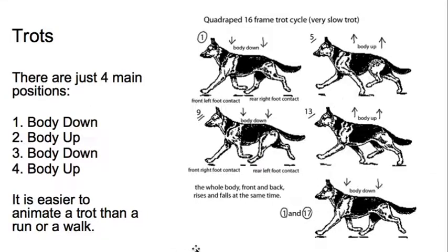Here's the main body positions shown on an Alsatian. Frame one, the body is going down. At frame five, the body's going up. Frame nine, the body's going down. Frame 13, it's going up. And frame 17, which is the same as one, the body is going down.